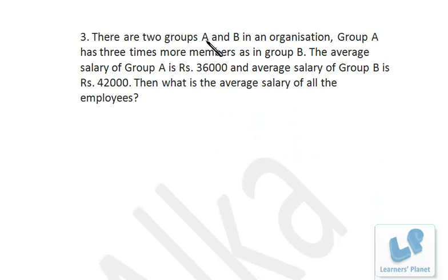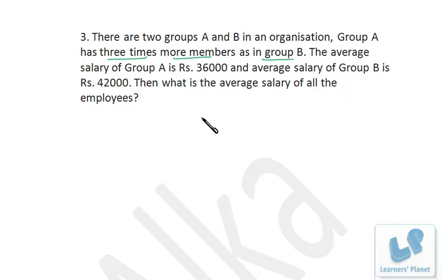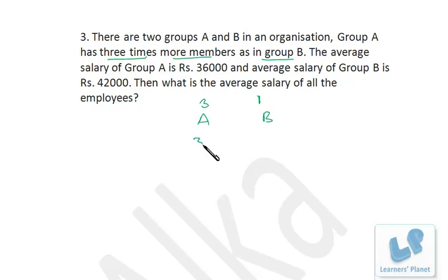Now this problem is based on averages. There are 2 groups A and B in an organization. Group A has 3 times more members than Group B. The average salary of Group A is 36,000 and average salary of Group B is 42,000. What is the average salary of all the employees? This problem can be easily solved by the allegation method. The number of members is in the ratio 3 to 1 since Group A has 3 times. The average salary of Group A is 36,000 and Group B is 42,000. I assume the overall average is x.